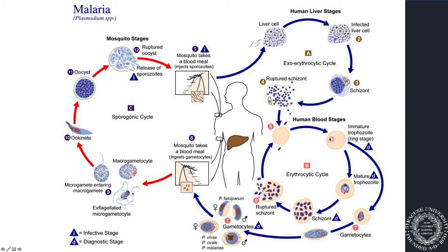In the mosquito's gut, the gametocytes form an oocyst, then move outside the gut through what's called an ookinete, and eventually make their way into the salivary glands. That mosquito takes another blood meal and then passes the parasite on. And so we have the human cycle of malaria and the mosquito cycle of malaria.